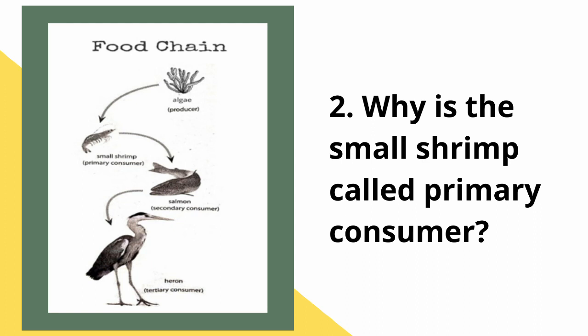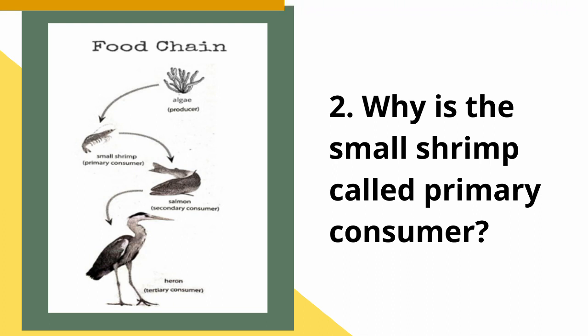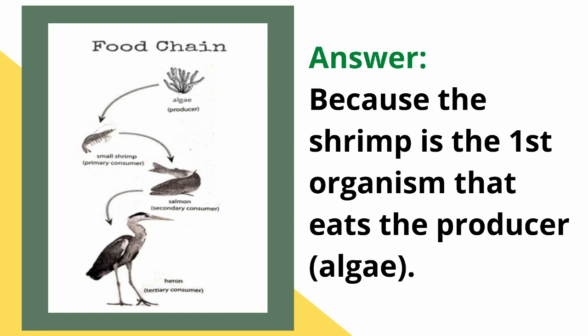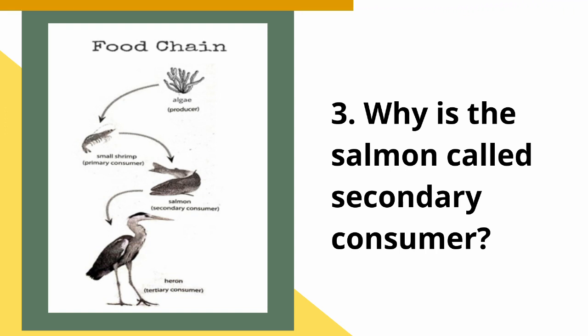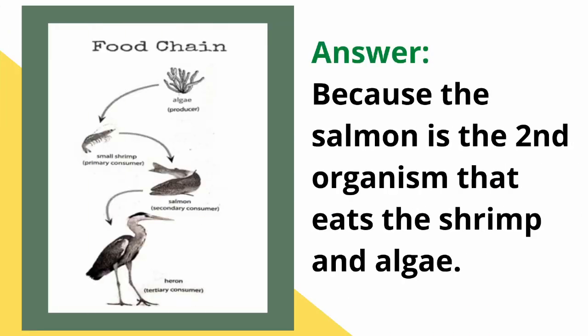Number two: why is the small shrimp called the primary consumer? Answer: because the shrimp is the first organism that eats the producer. Number three: why is the salmon called the secondary consumer? Answer: because the salmon is the second organism that eats the shrimp and the algae.